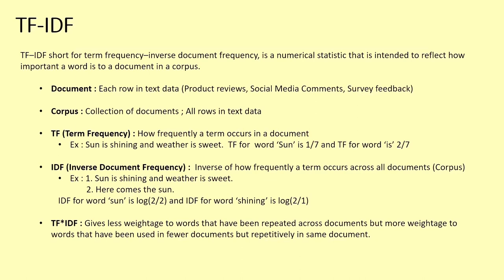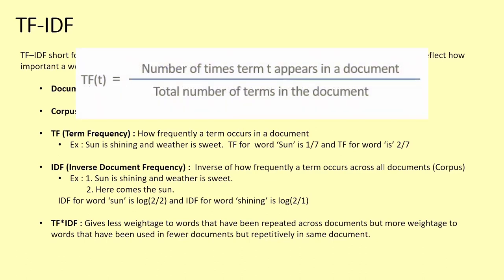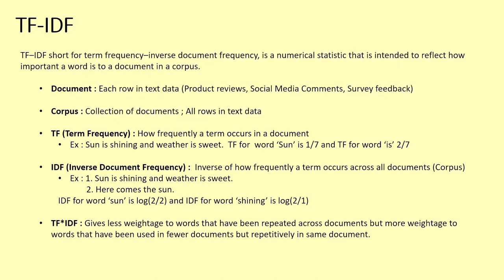Term frequency gives you an idea about how frequently a term occurs in a document. For example, in the sentence 'sun is shining and weather is sweet,' the term frequency for the word 'sun' is one by seven, because there are seven words and 'sun' occurred once. Similarly, the term frequency for 'is' is two by seven, since 'is' occurred twice.